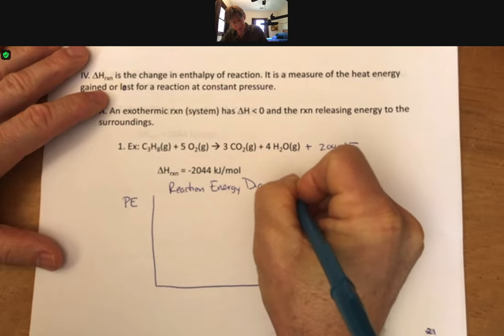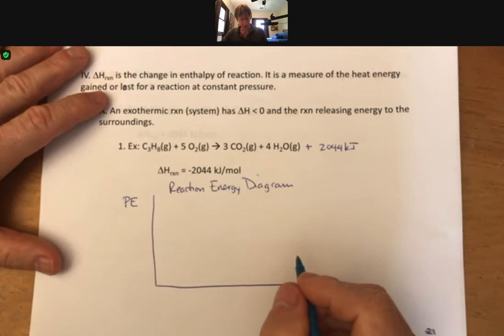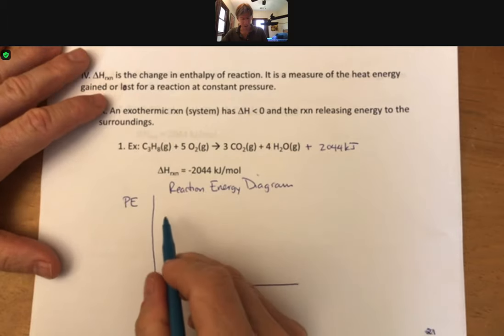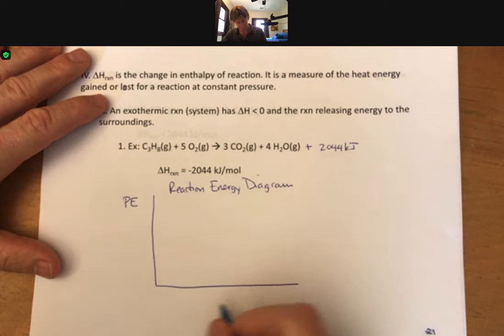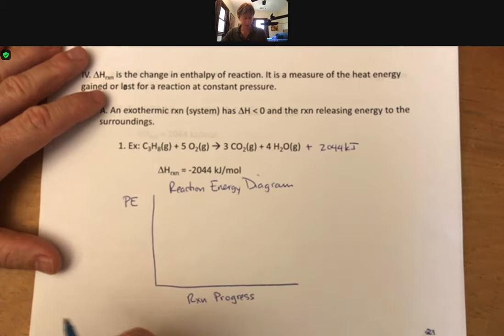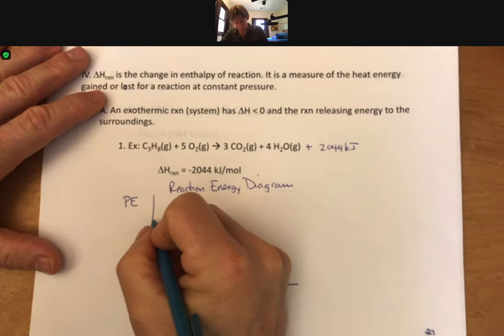And you'll see these quite a bit as we go. And reaction energy diagrams always have reactants on the left and products on the right. And they oftentimes have the words reaction progress on the x-axis because the reaction goes from reactants to products. And let me go ahead and draw this.